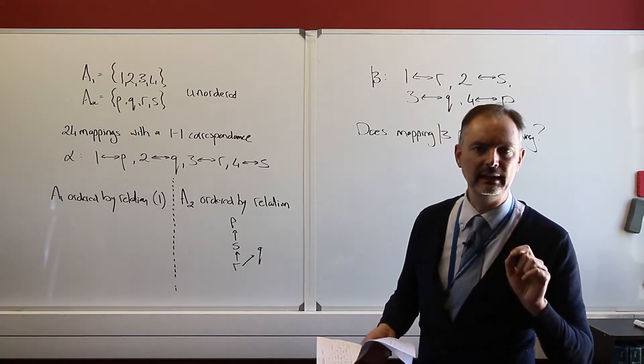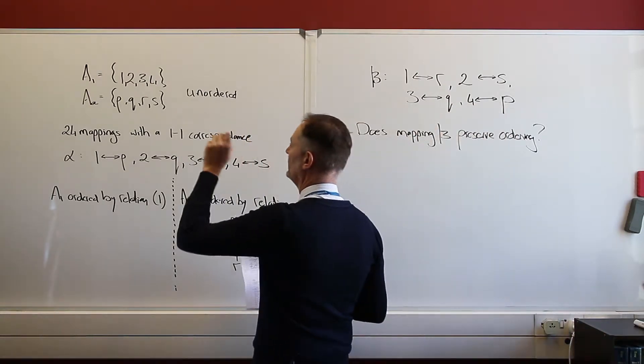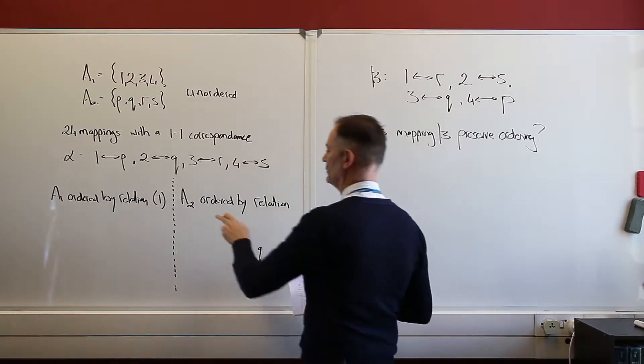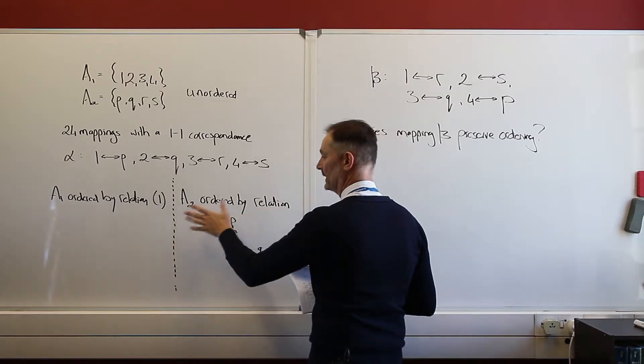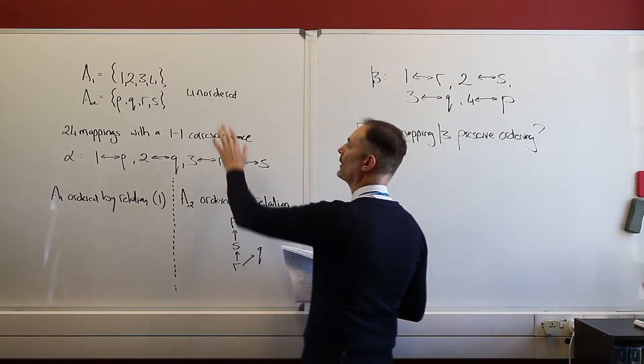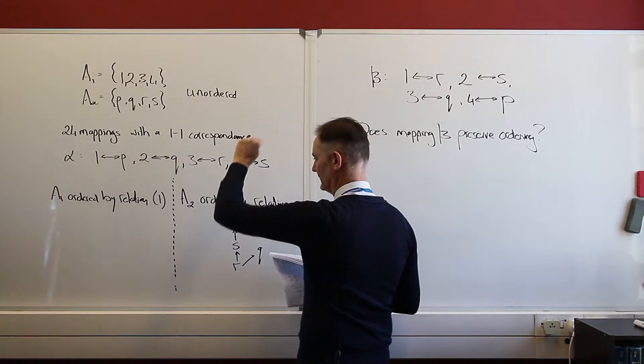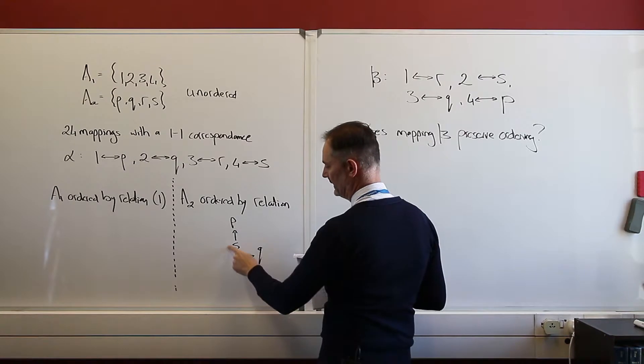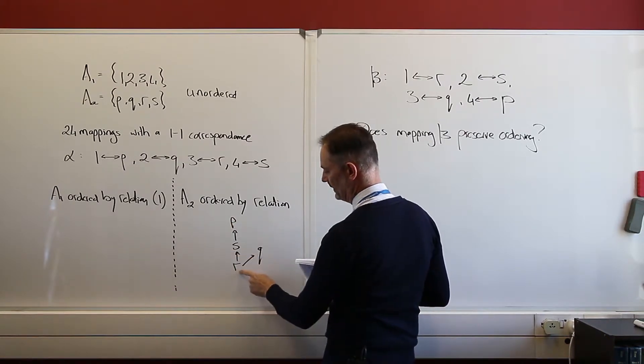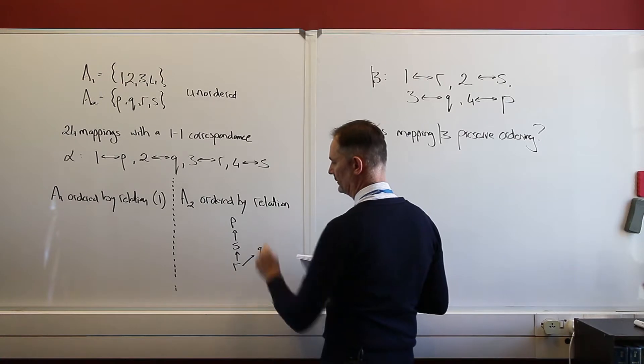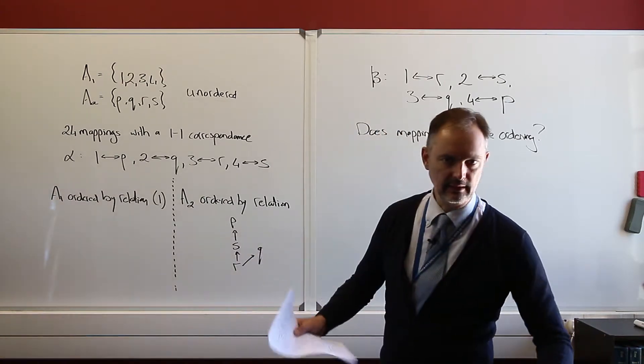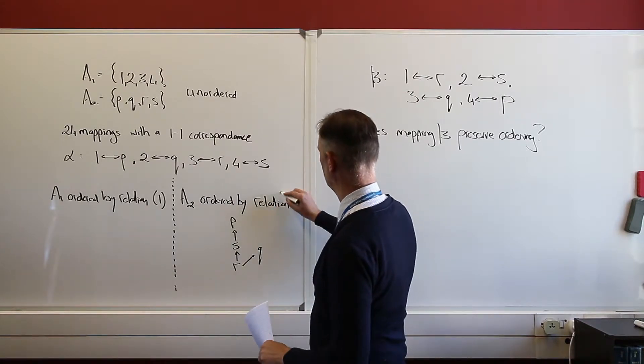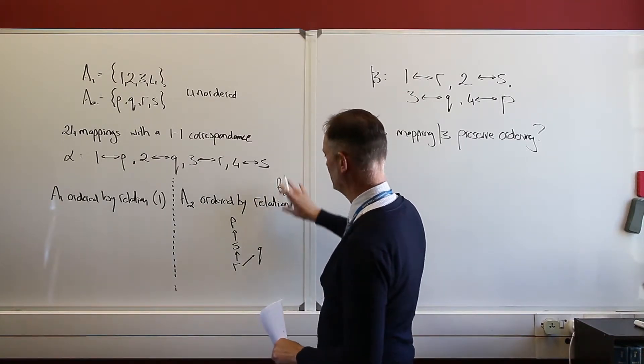Now, let's bring in a relation on A1 and a relation on A2. My relation on A2, it is ordered by, and what I'm going to do with this relation is to order these two unordered sets. So for A2, I'm going to order it by the following relation: r to s, s to p, and r to q as well. So r goes to q and s, and s goes to p. I've just decided that is the relation, and I could call this relation that fancy r, 2. That's my relation there.